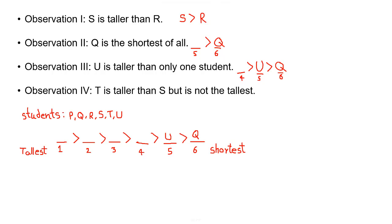Now from fourth observation, T is taller than S. T is taller than S, so T cannot be 1. Therefore T can be 2 or 3 because T is also taller than S.